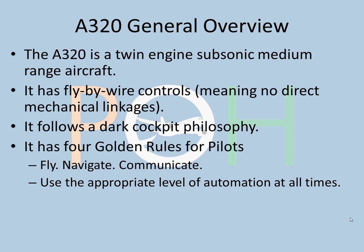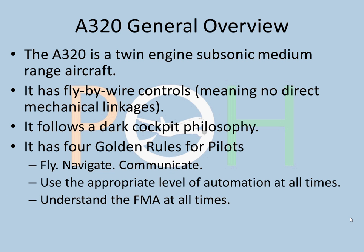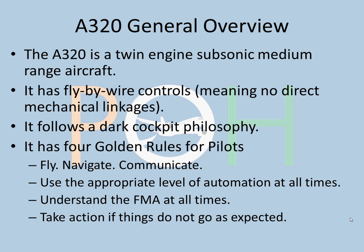The second golden rule is to use the appropriate level of automation at all times — Airbus recommends that. Third, understand the FMA — the flight mode enunciator — at all times. And fourth, take action if things do not go as expected. For example, if the autopilot is not doing things as you would expect, you take action and take control.